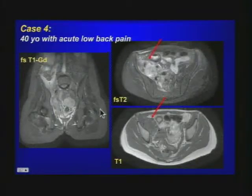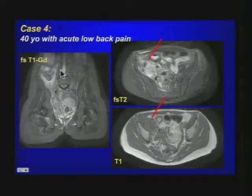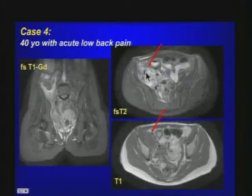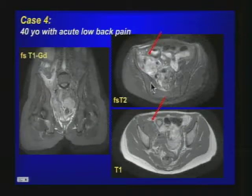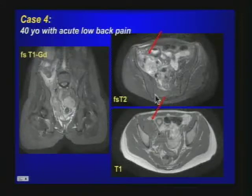Case number four: a 40-year-old man with acute low back pain, increasingly worse over a couple of days. On these MR images, there is an enhancing lesion located in the psoas muscle, the iliacus muscle, and the iliopsoas muscle. Please note the dark areas — dark spots visible not only on T2-weighted images but also on T1-weighted images, indicating dark material within this lesion.